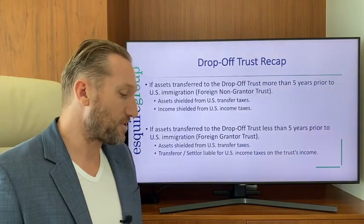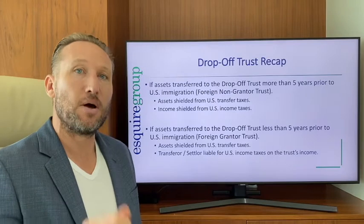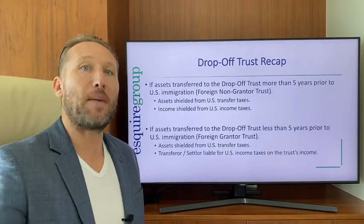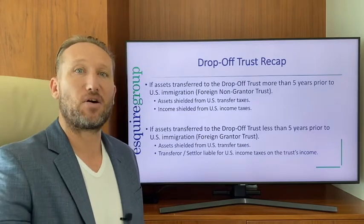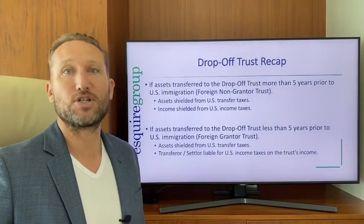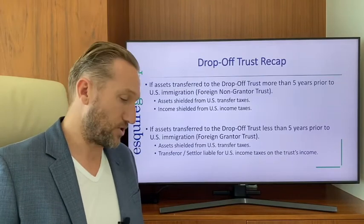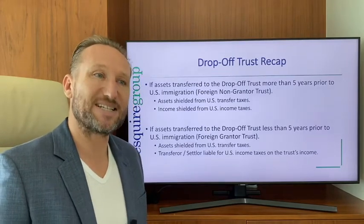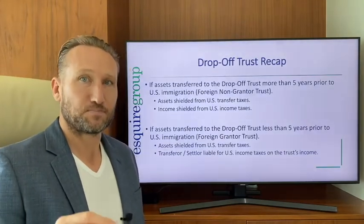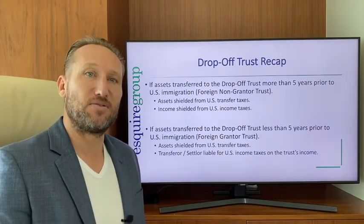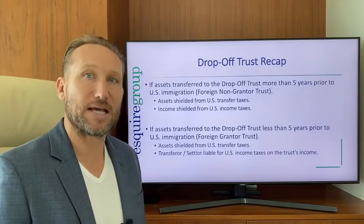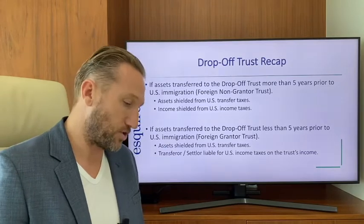To recap: if assets are transferred to a drop-off trust more than five years before the person becomes a U.S. tax resident or domiciliary, the assets won't be subject to U.S. transfer taxes — meaning gift and estate taxes — and the income generated by the trust won't be subject to U.S. income taxes, as long as there is no U.S. income. If transferred less than five years before becoming a U.S. resident or domiciliary, the assets are still shielded from transfer taxes, but the person who transferred the assets will be liable for income tax on the trust's income — and that's worldwide income, not just U.S. income.